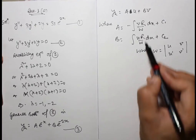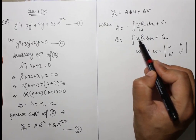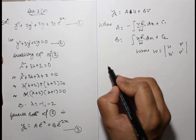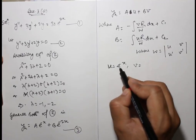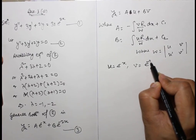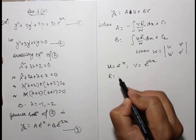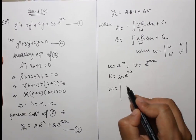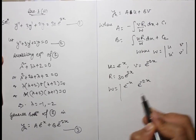Here r is the right-hand side function, u and v are the basis solutions. For this equation: u = e^(-x), v = e^(-2x), and r = 30e^(2x). The Wronskian W is computed from the determinant of e^(-x), e^(-2x) and their derivatives.